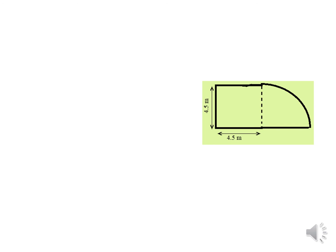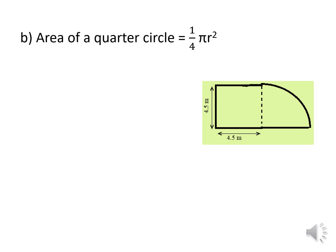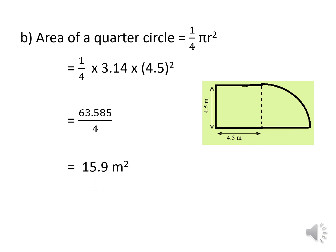Now we have to find the area of this compound shape. First, find the area of the quarter circle. The quarter circle formula is 1 over 4 times pi r square. What is r? 4.5. So: 1 over 4 times 3.14 times 4.5 squared. Use your calculator carefully — 3.14 times 4.5 squared equals 63.585, then divide by 4. The area of the quarter circle is 15.9 meter square.